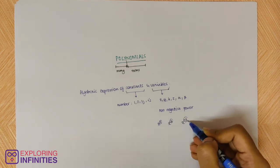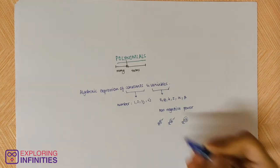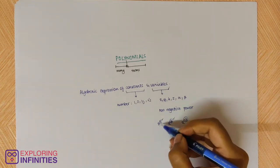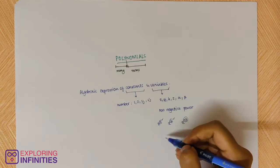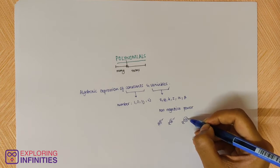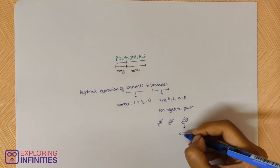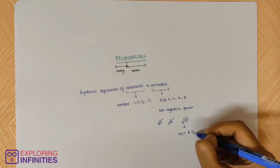And over here is minus 2. We can clearly see that 2 and 3 are non-negative powers. So an expression containing x squared or x cubed will be a polynomial. But an expression containing x to the power minus 2, where minus 2 is a negative power, is not a polynomial.